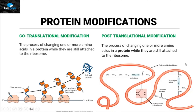On the other hand, post-translational modification means that once the process of translation is ended and the protein is no longer attached to the ribosome, the process of changing one or more amino acids or attachment of a non-protein part occurs to this protein. This type of modification is called post-translational modification.